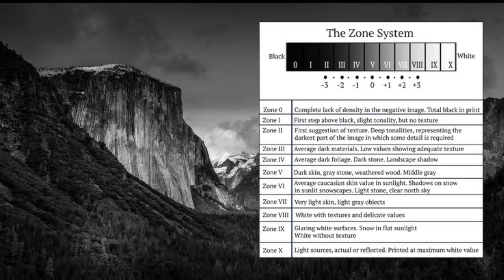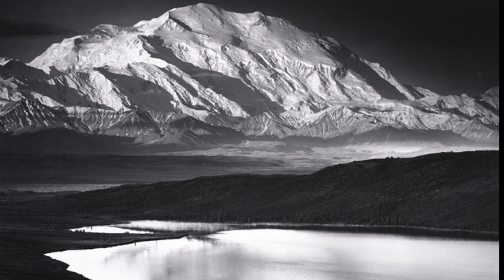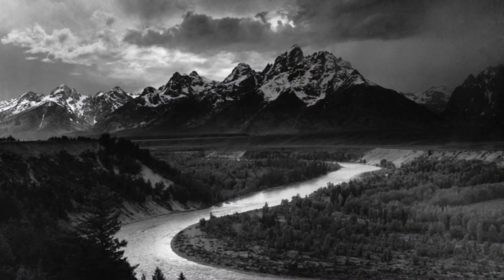Back when film was more prevalent, one photographer Ansel Adams created something called the Zone System, which was a technique designed to find the optimal exposure of film and development. This was a very technical process, way beyond reach for most of us. It wasn't quick and it wasn't easy, although the results did speak for themselves.